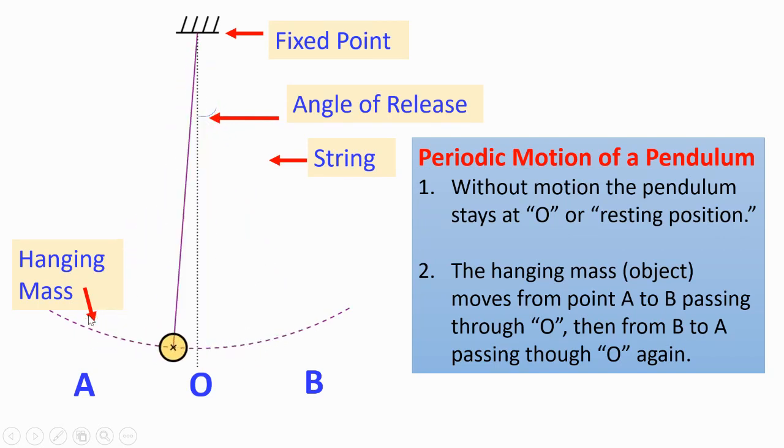The pendulum is going to move from A to B, B to A, passing through zero. So the hanging mass moves from point A to B, passing through zero, and then from B to A, passing through zero. So zero will be part of this oscillation twice.